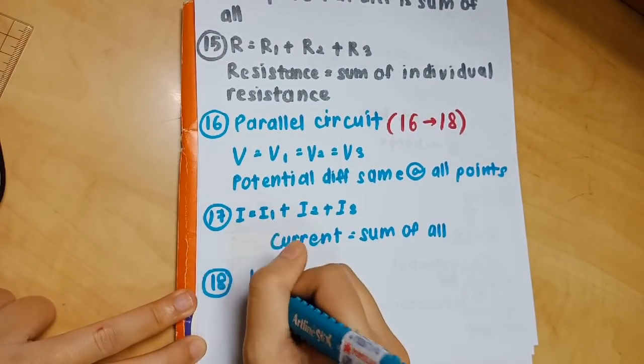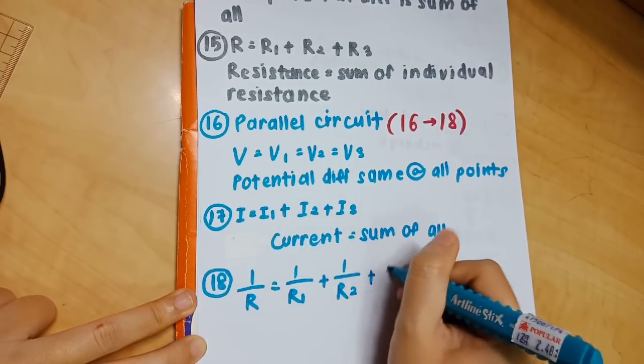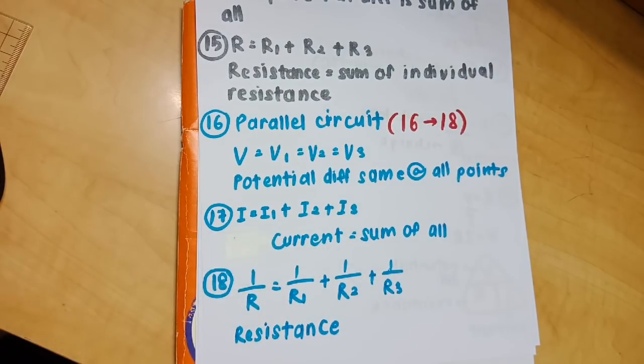Number 18: 1 over R equals 1 over R1 plus 1 over R2 plus 1 over R3. This is simply the formula to find resistance in a parallel circuit.